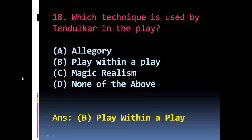Question 18: Which technique is used by Tendulkar in the play? The options are A) Allegory, B) Play within a play, C) Magic Realism, D) None of the above. The right answer is B) Play within a play.